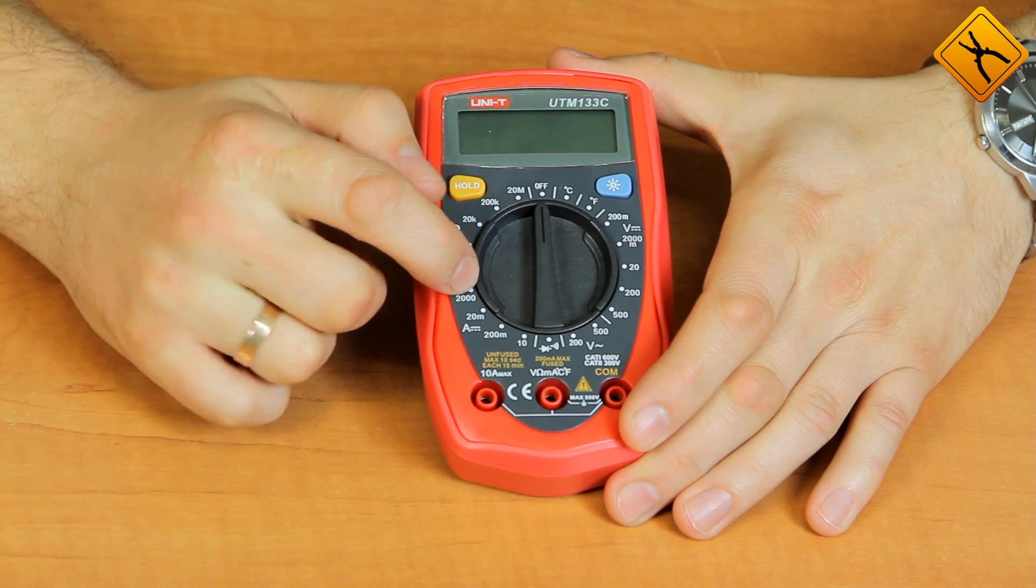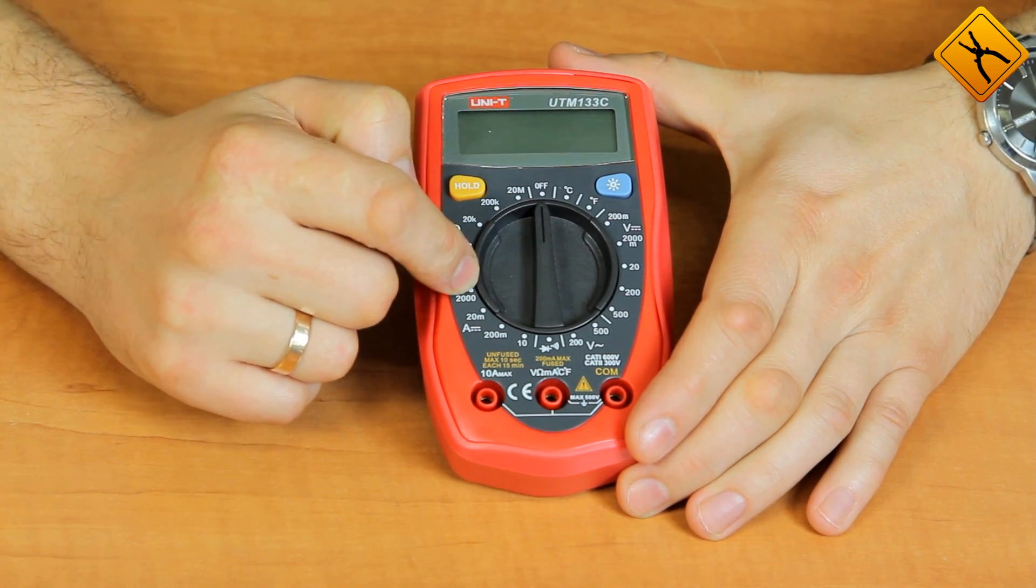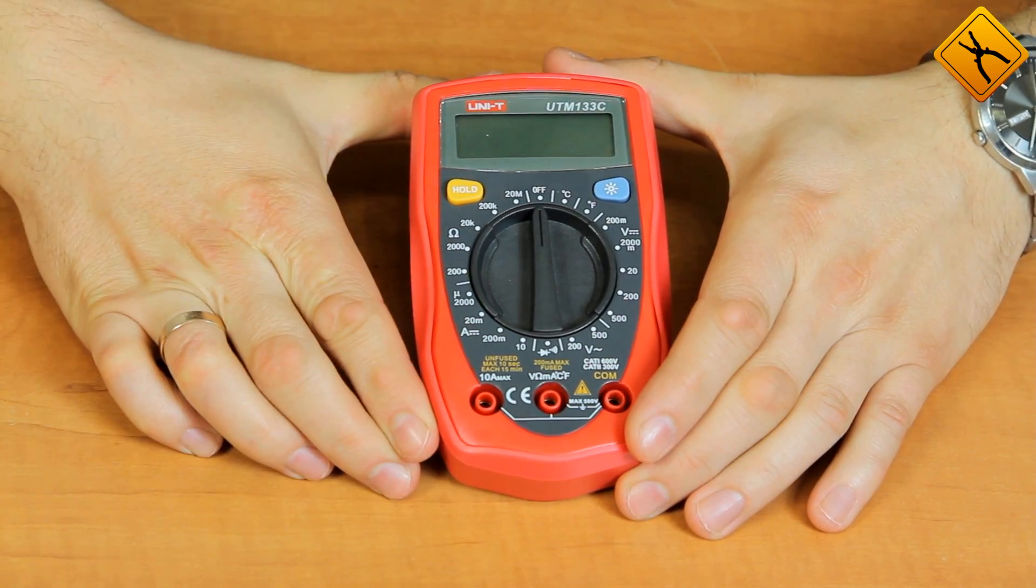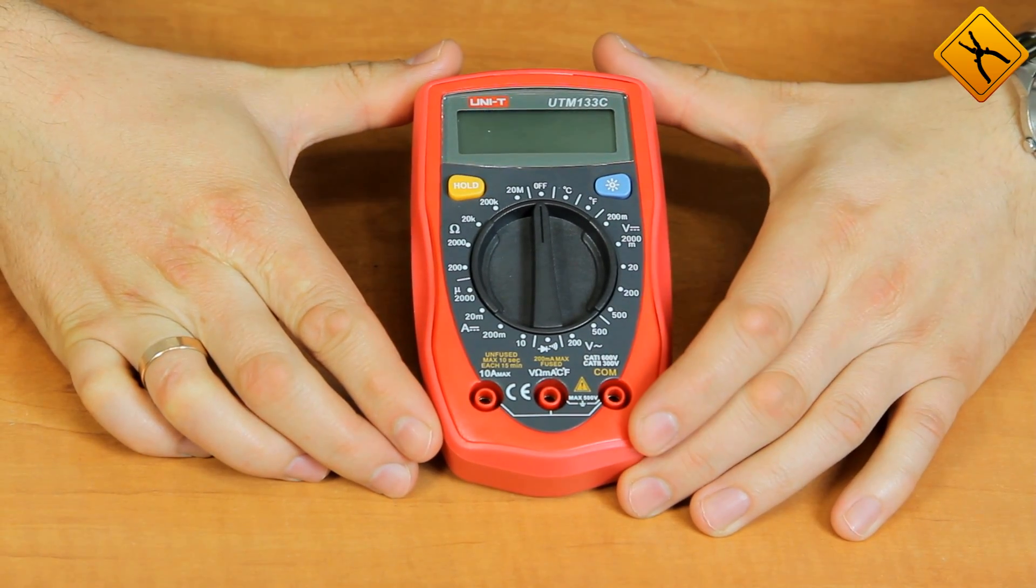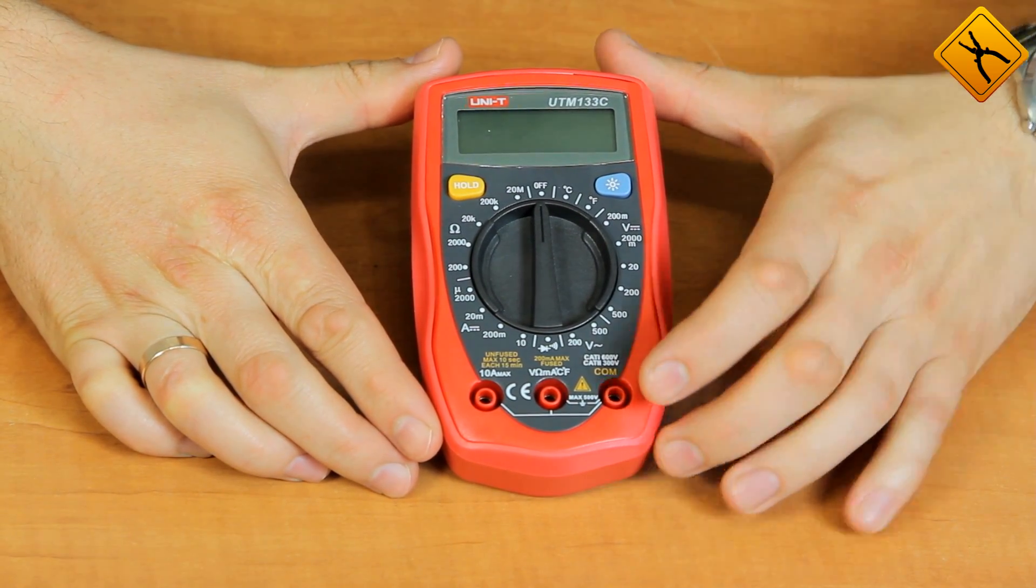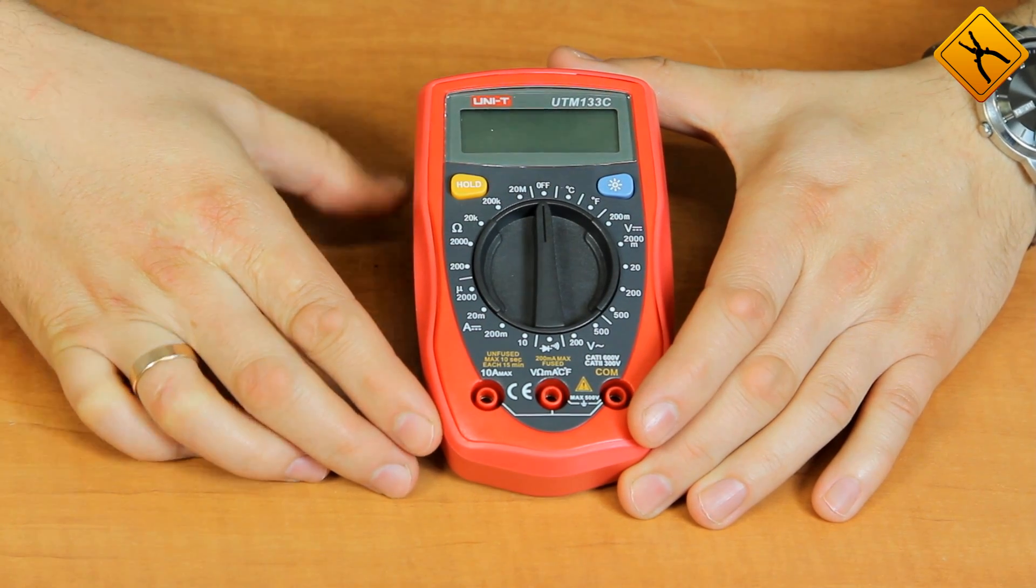Each of the switch positions corresponds to its own probe's connection combination. COM terminal is a general connector. It is used with all measurement modes. Traditionally, you connect a black probe to it.